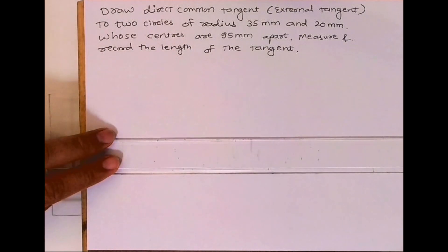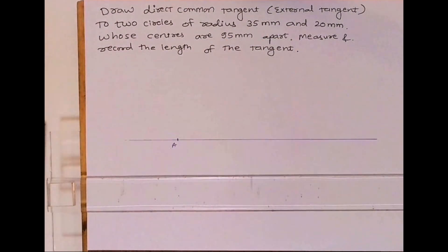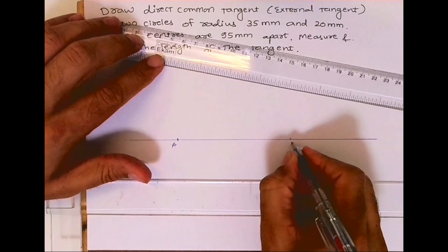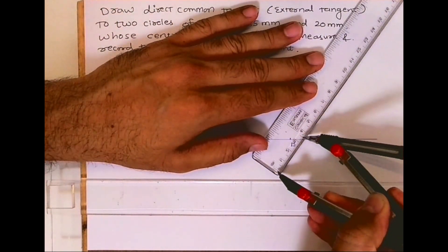First, we'll draw a line and mark point A. It is given as 95, so from A to B it will be 95. Now from A we'll take radius 35.